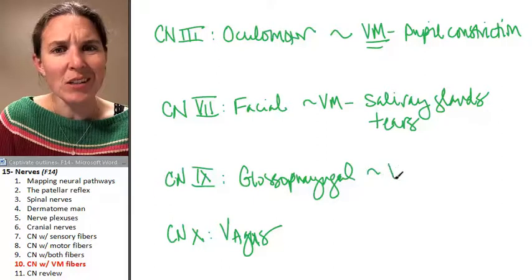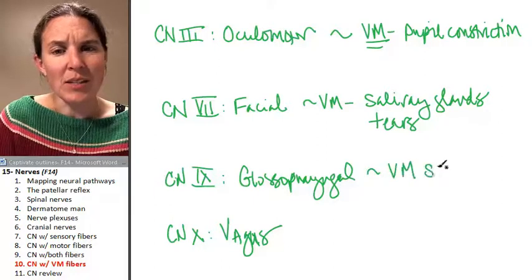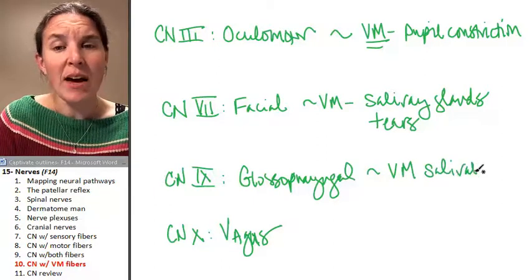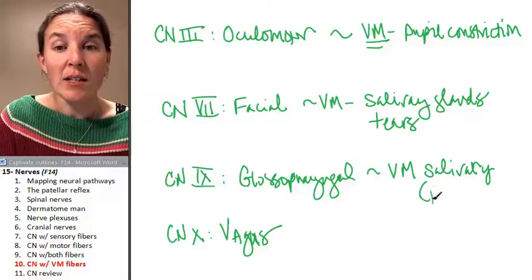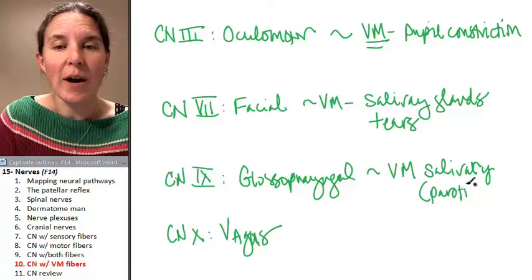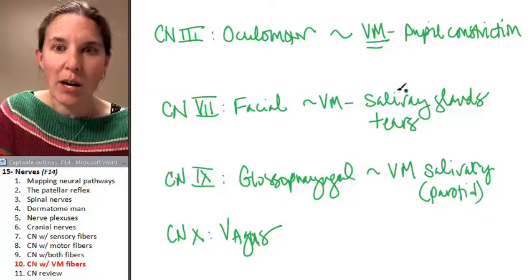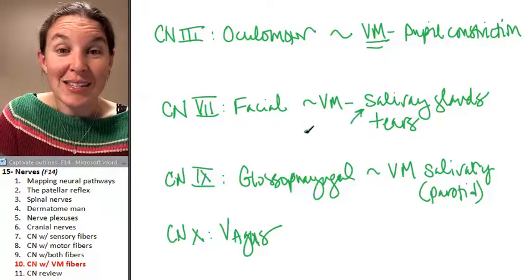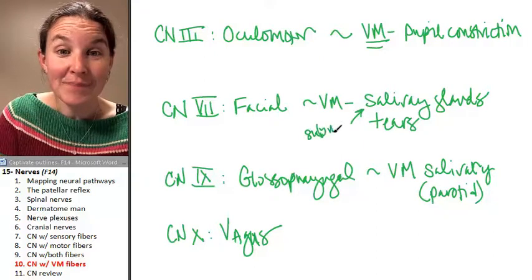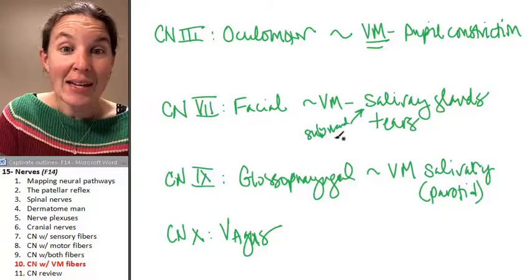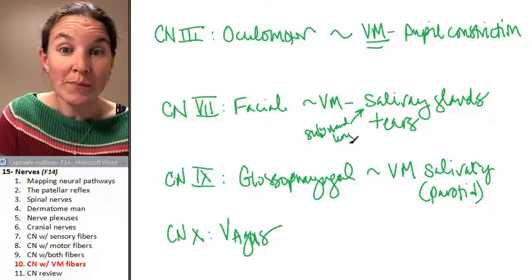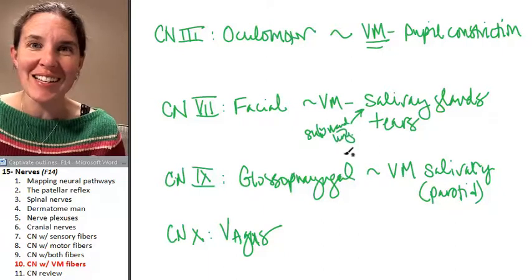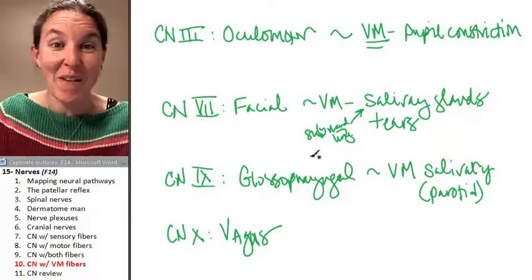However, glossopharyngeal is also salivary. In fact, it's the parotid gland. Oh, my gosh. We could totally do external brain question. I hope somebody remembers to tell me that I said this, because you could do submandibular and sublingual. Those are my two salivary glands that are innervated by the facial nerve.